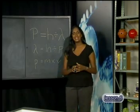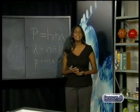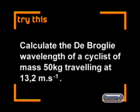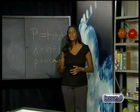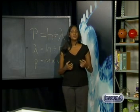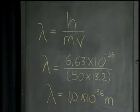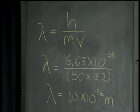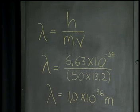Now that we have a basic understanding of the theory, let's see how this works in practice. Calculate the de Broglie wavelength of a cyclist of mass 50 kg traveling at 13.2 m per second. Using de Broglie's equation and substituting in the values we have been given, we get the wavelength of 6.63 times 10 to the minus 34 divided by 50 times 13.2. This gives us a wavelength of 1.0 times 10 to the minus 36 meters.